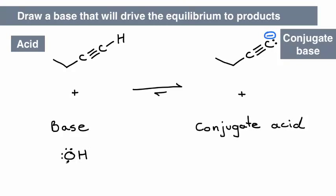For example, if we used hydroxide as the base, it would deprotonate the alkyne and give the acetylide, the conjugate base, and water, the conjugate acid. Will this equilibrium favor the products?